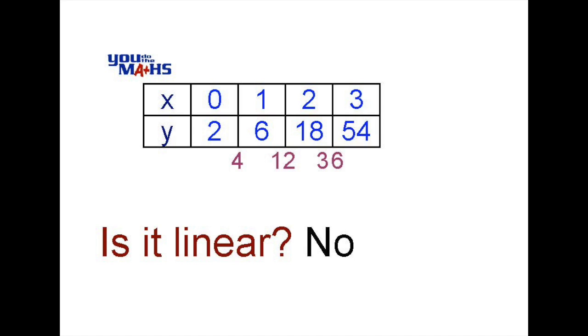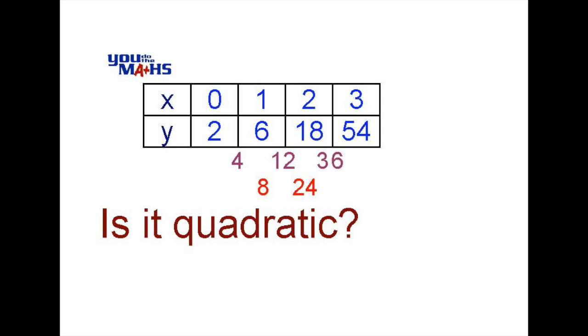The next thing we'll do is investigate the second differences, which is the difference of the first difference, and we'll ask ourselves if it's possibly a quadratic pattern. We can see the difference between 12 and 4 is 8, and 36 minus 12 is 24. So our second differences are not constant either. So that means that this pattern is not a quadratic.